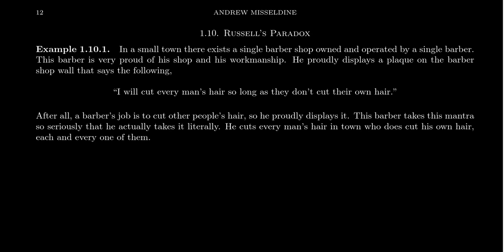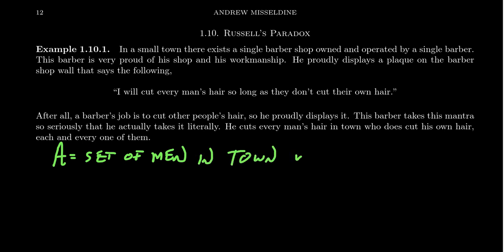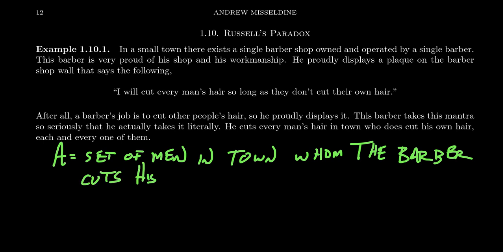This barber is so proud of his mantra that he takes it literally. He cuts every man's hair in town who does not cut his own hair — each and every one of them. So let us consider the set of men in the town for which this barber cuts their hair. We're going to call that set A. Set A is the set of men in town whom the barber cuts their hair. That seems like a fairly simple, well-defined set. If you take a man in town, you should be able to decide: does that person belong to A or not?